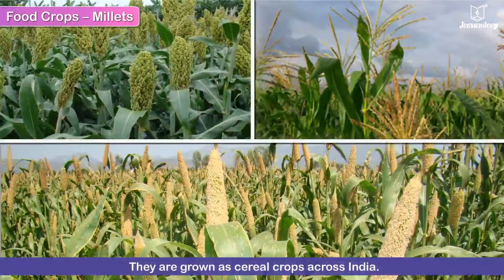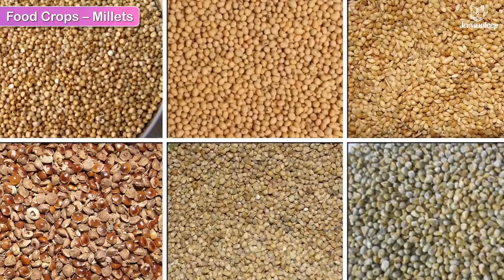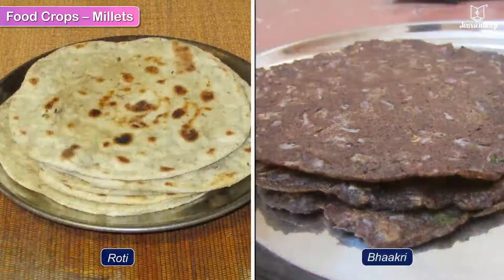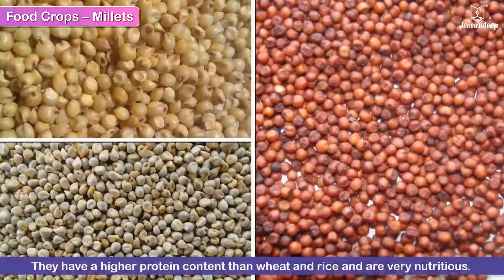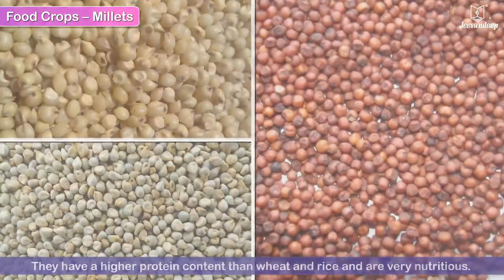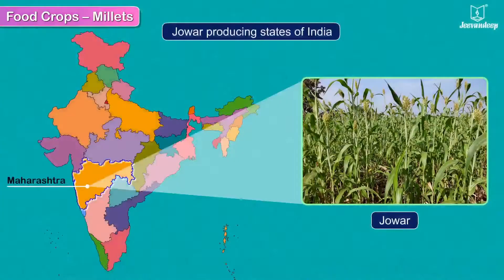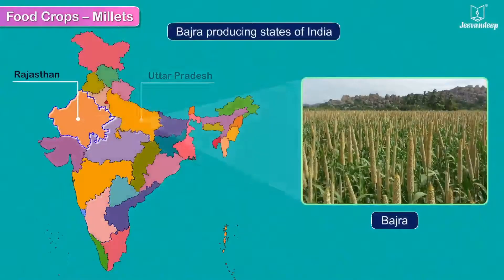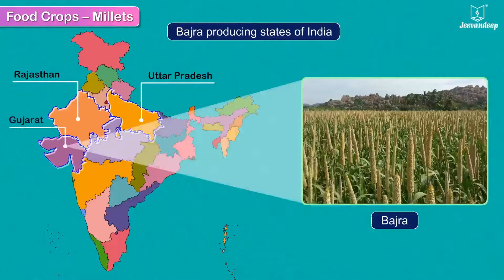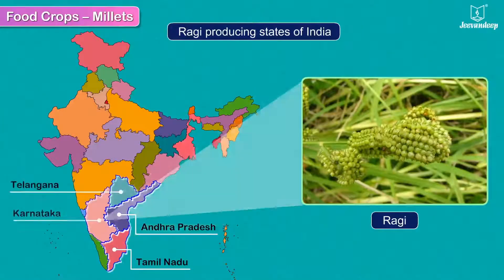Millets are coarse grains grown as cereal crops across India. Jowar, Bajra, and Ragi are widely grown millets in India. Millets are largely consumed as human food in the form of roti or bhakri, and also used as animal fodder and bird food. They have a higher protein content than wheat and rice and are very nutritious. Millets need a dry climate to grow well. Ragi is grown in Andhra Pradesh, Tamil Nadu, Telangana, and Karnataka.